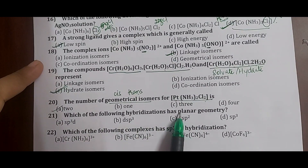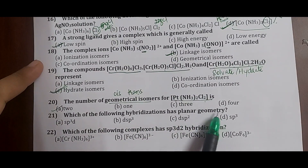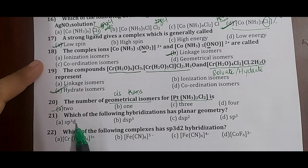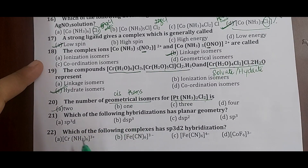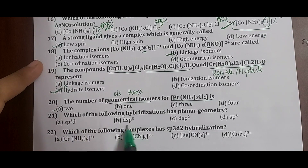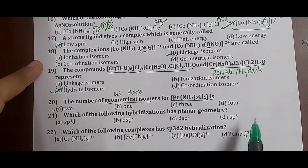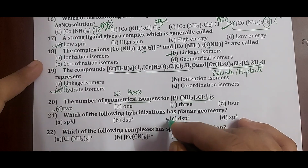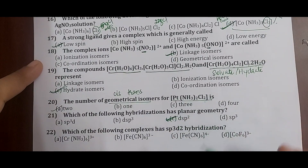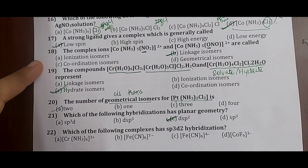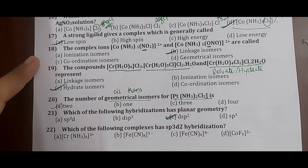Question 21: which hybridization has planar geometry? sp³d hybridization has trigonal bipyramidal geometry; dsp³ also has trigonal bipyramidal geometry; dsp² has square planar geometry; sp³ has tetrahedral geometry. The planar geometry is exhibited by dsp² hybridization. Correct answer: option C.